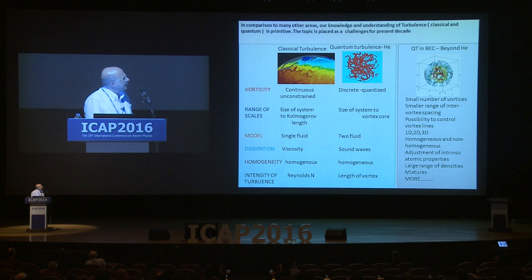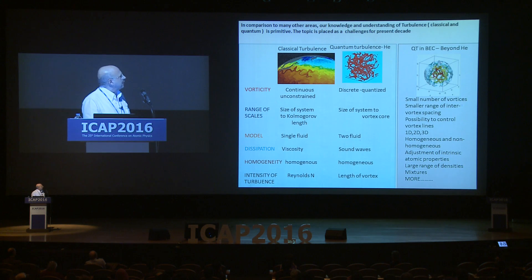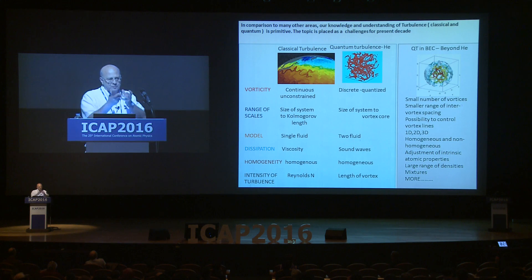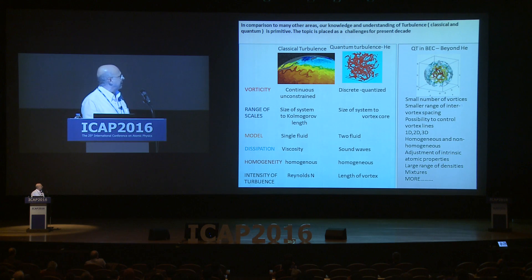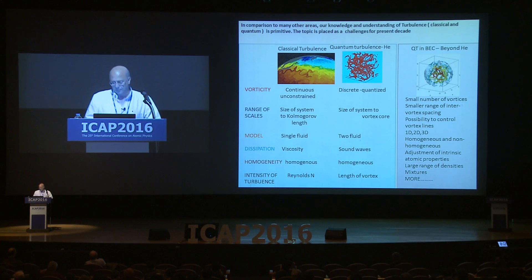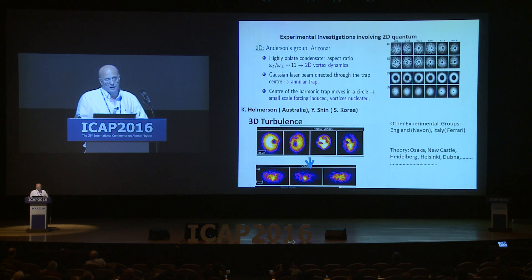When we go to Bose condensate it goes much beyond helium. Turbulence can be reached with a small number of vortices; we have a large surface-to-volume ratio; vortex spacing is not so large; we can study different dimensions; and we can adjust interactions and density in a much easier way. We can also mix superfluids. So it seems to be very interesting.